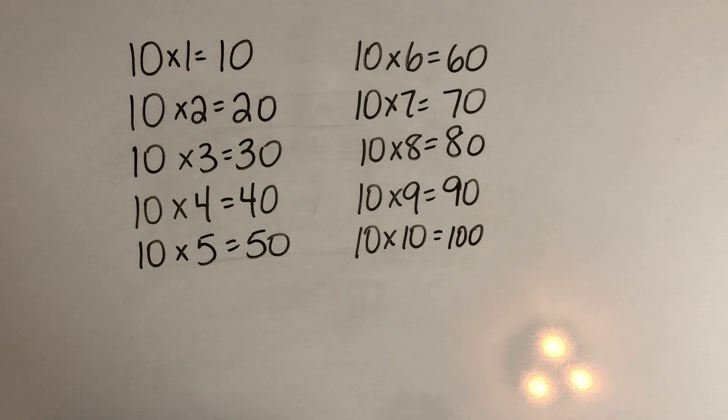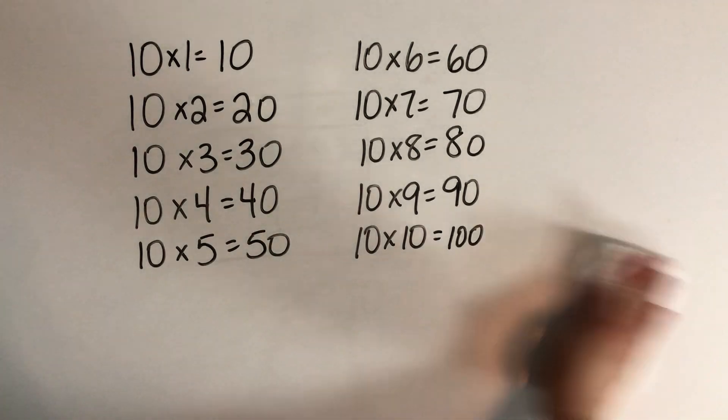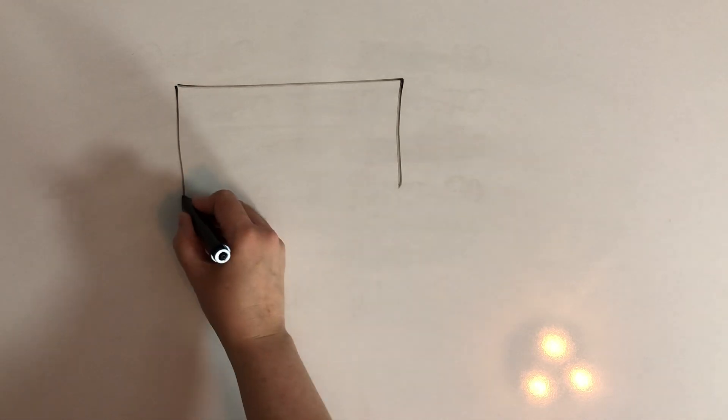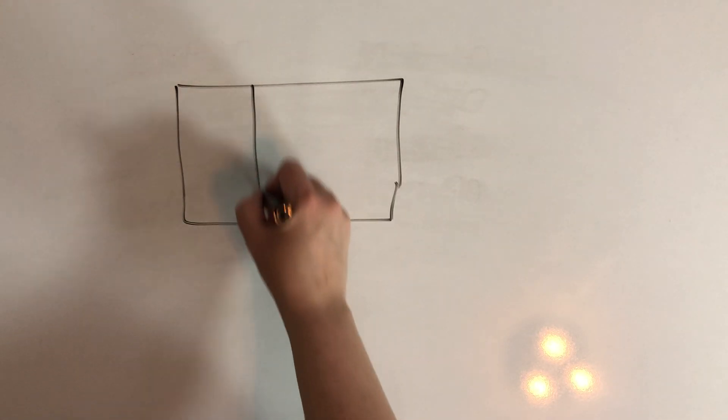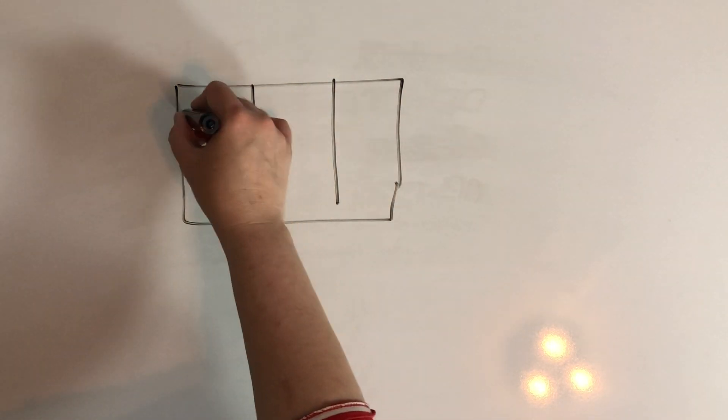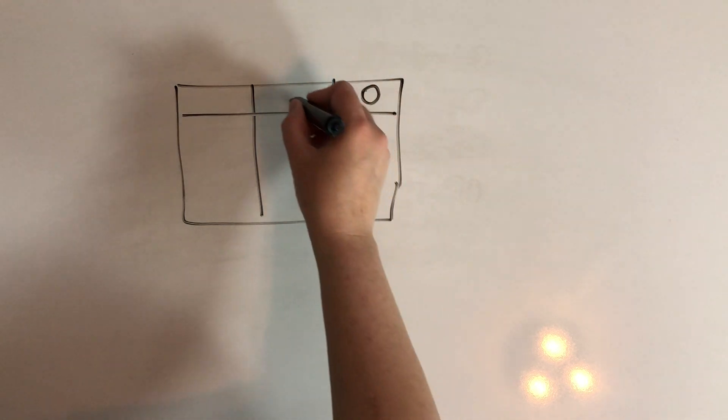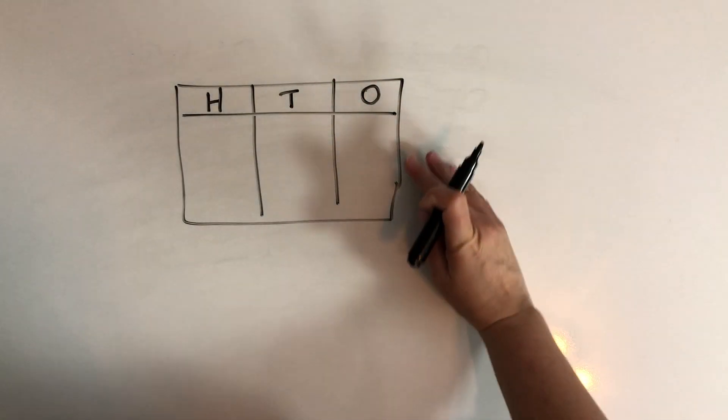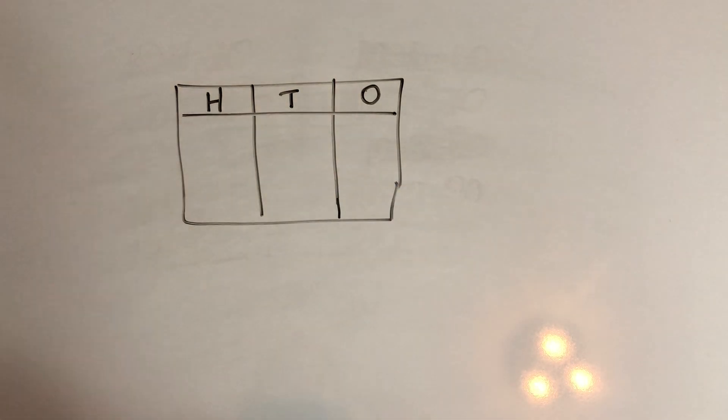Now I want to give you just a quick challenge because I think you're up for a challenge. Let's draw our place value chart again. This time I'm going to include the 100s place as well. So here is my 1s, my 10s, and my 100s. It's a little crooked, but that's okay.